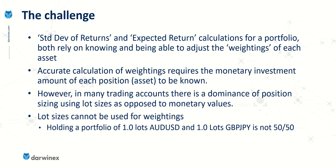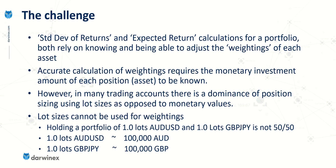A quick example of why lot sizes can't be used for weightings: let's say you're holding a simple portfolio with just two positions — a position in Australian dollar USD and a position in pound yen — and both have a size of 1.0 lots. Does this produce an equal weighting for each asset? The answer is no. One lot of Australian dollar USD might have a monetary value of 100,000 Australian dollars, whereas a one lot position in pound yen will have a 100,000 British pound monetary value. Clearly these are not equally weighted, so instead of a 50-50 weighting, it might be something more like 30-70 or 35-65. This difference becomes even more pronounced when incorporating other asset classes such as stock indices and commodities.